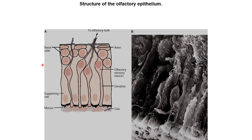Here we can see the structure of the olfactory epithelium in more detail — we are looking at the thickness of the skin. Inside the epithelium we have the olfactory sensory neurons; these are the cell bodies, and they have very fine branches that come out known as cilia. These cilia contain the odorant receptor proteins that detect the odors. There are also supporting cells, which provide structural and metabolic support, helping to maintain nutrition for the olfactory sensory neurons.